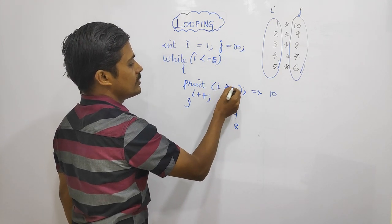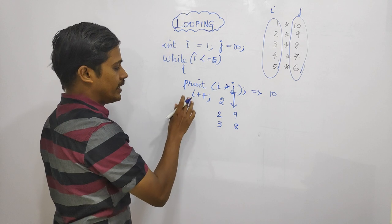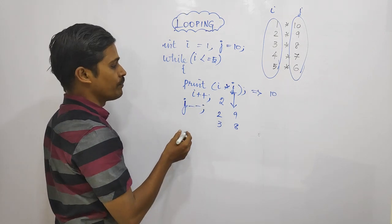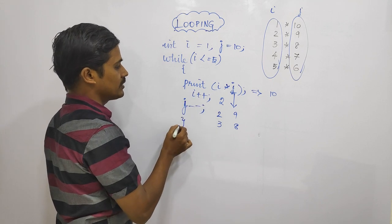In this case, print i then j. What do we do? i++, j--. That's it. i increments, j decrements. Let's start.